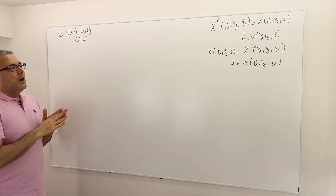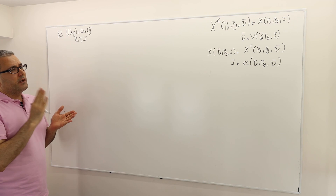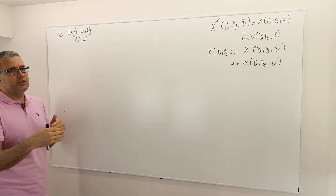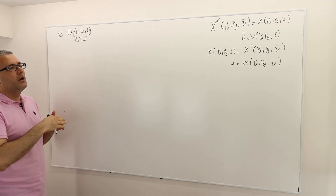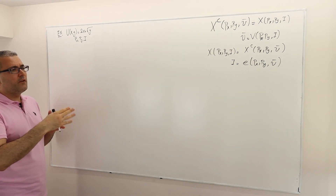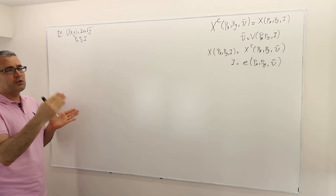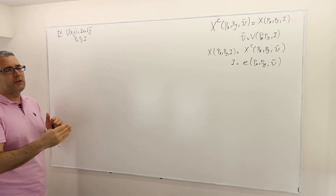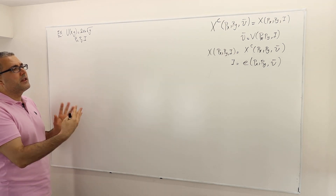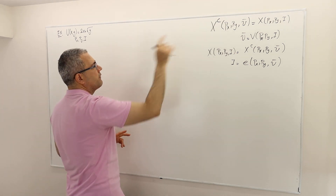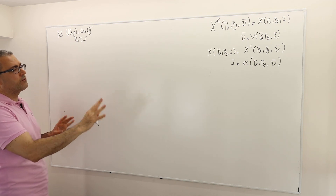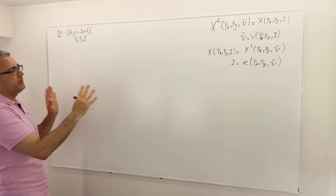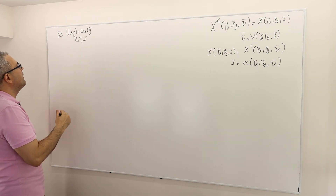Then I'll derive the indirect utility function. Then I'm going to solve the cost minimization problem, find the Hicksian demand for X and Y, and calculate the expenditure function. As a third step I'll verify these two. There's going to be a lot of writing and some of it will be erased because my board is not as big as it should be.